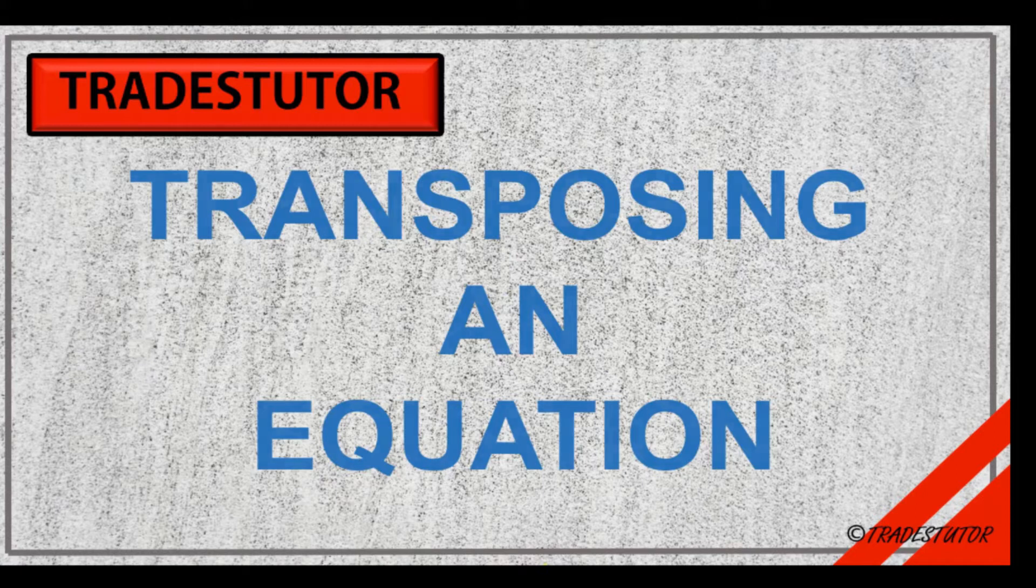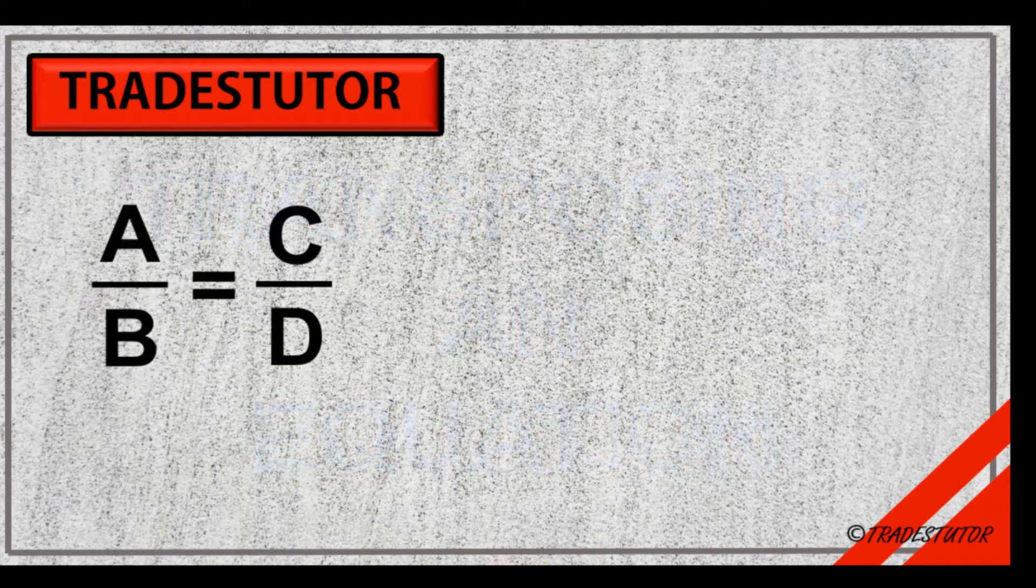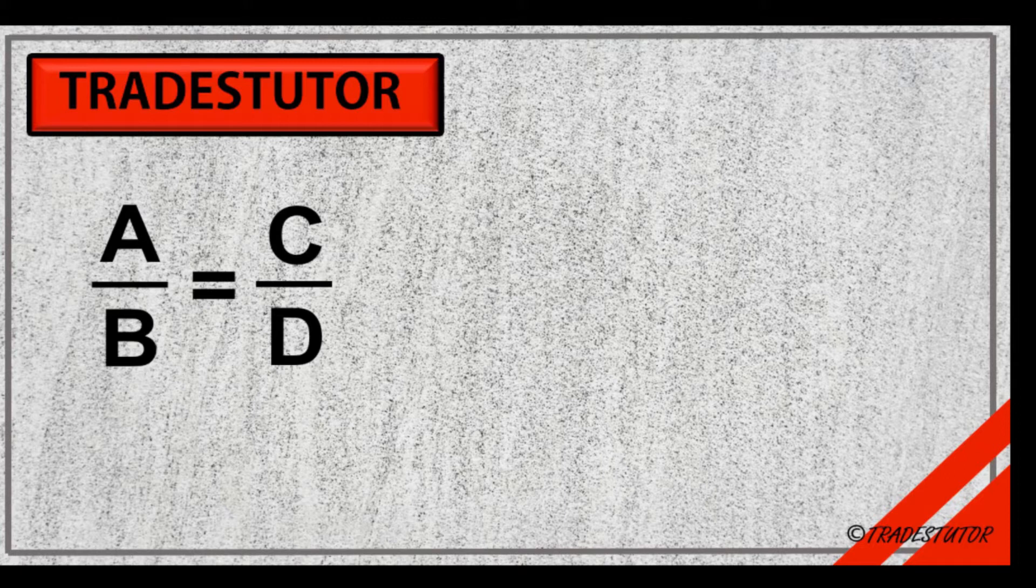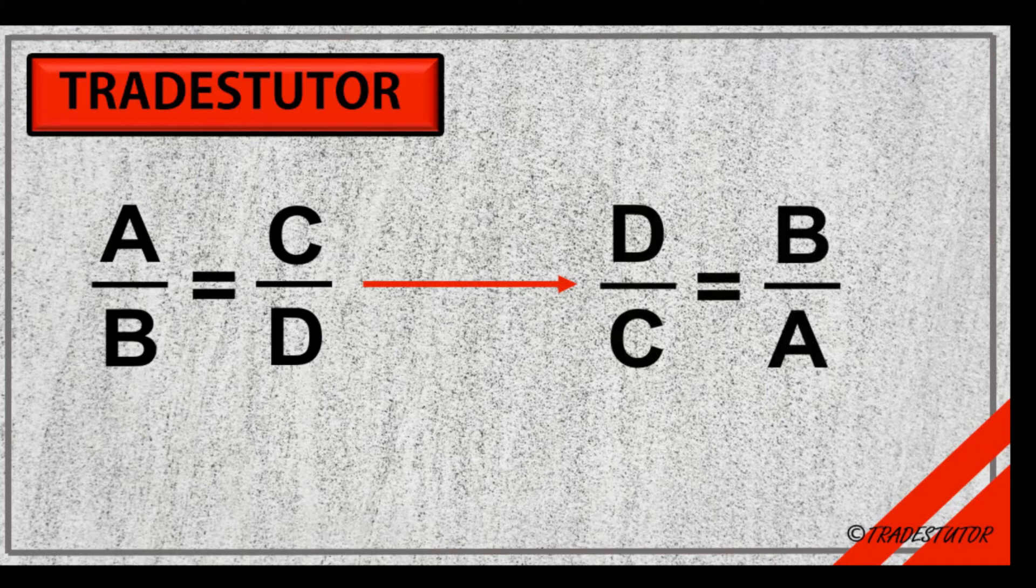First thing we want to look at is what we're talking about here. Here's an equation: A over B equals C over D. What we want to be able to do is move the variables around so that the math stays the same. We don't change things, but we might change the look of the equation itself. So you might move everything around and it ends up looking like this, but the math is all good. The first equation and the second equation all work out.